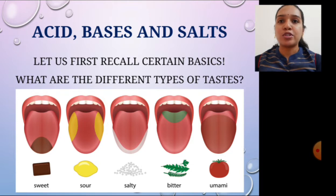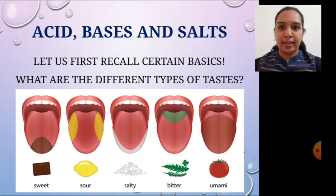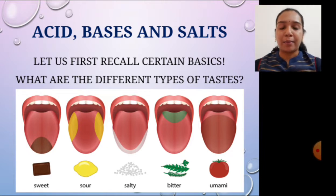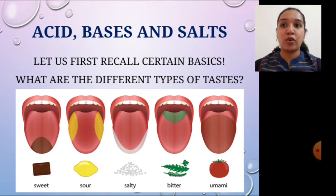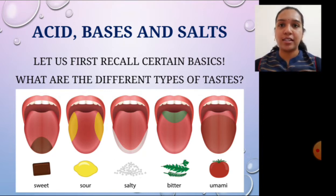What are the most common and different types of tastes we feel? They are sweet, sour, salty, bitter and umami. Umami means the taste of all the other four tastes together — sweet, sour, salty and bitter together is called umami.